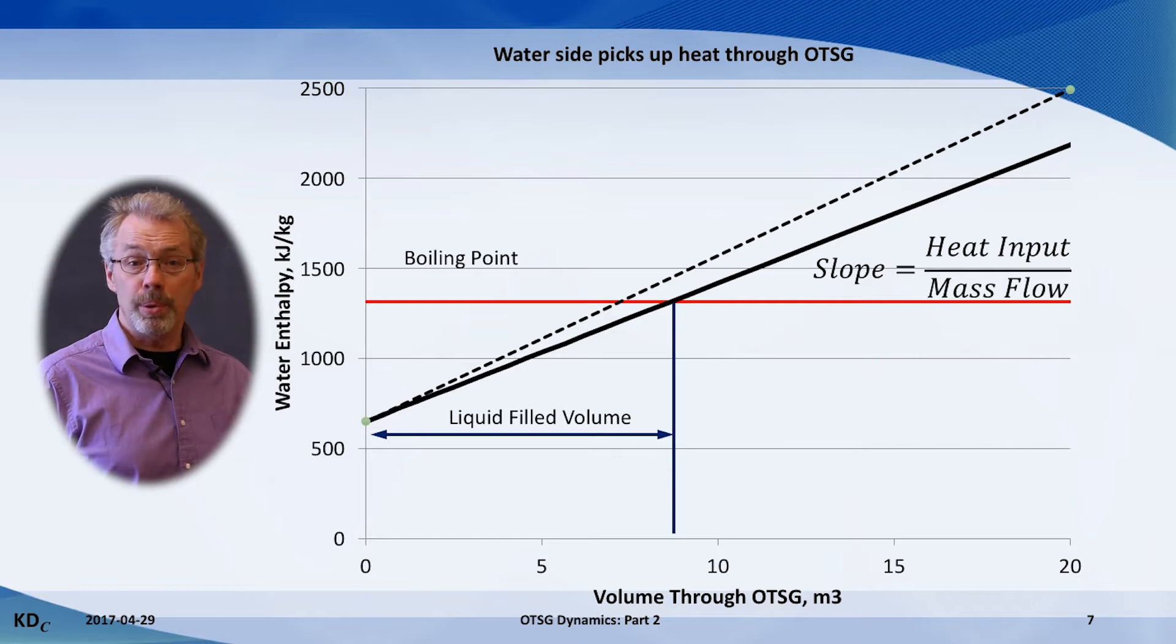Along with the OTSG producing steam with higher enthalpy and quality, the volume of water held in the OTSG also decreases. Water must be kicked out of the OTSG during this transition, which means the Venturi steam quality will read false. Part 3 will demonstrate how this plays out.